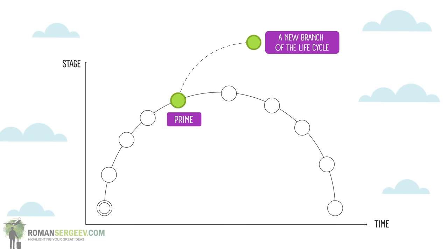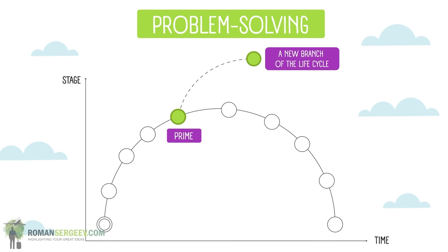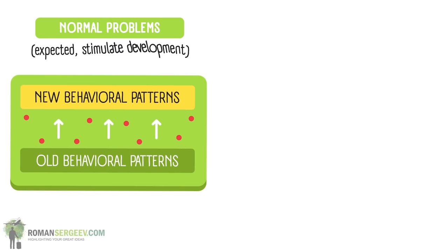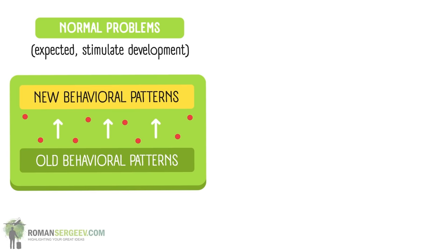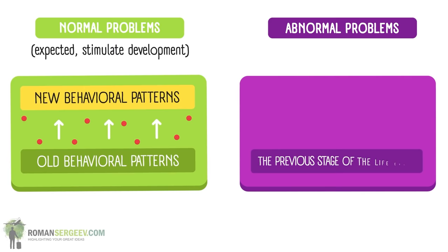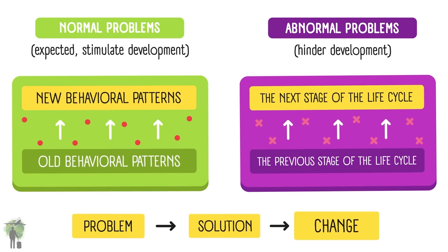How to achieve it? You need to change and solve problems regularly, not avoid them. An organization can have both normal and abnormal problems, which are different for each stage. Normal problems are associated with the transition from old behavioral patterns to new ones. Abnormal problems arise when someone or something resists changes, and they need to be addressed first — they will not dissipate by themselves and can lead the company to premature death.